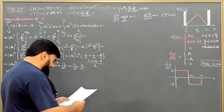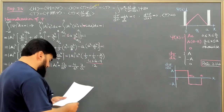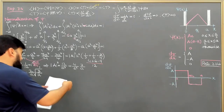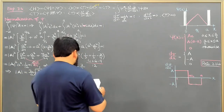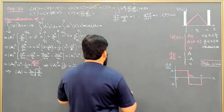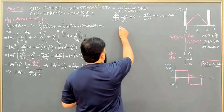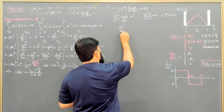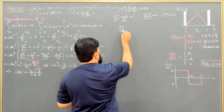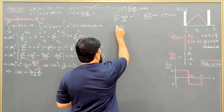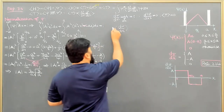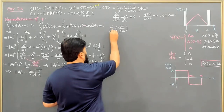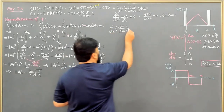The derivative of a step function is a delta function, and we will utilize this. I can write that D psi over Dx — if this is a step function, then taking another derivative D over Dx of this step function gives something behaving like a delta function.